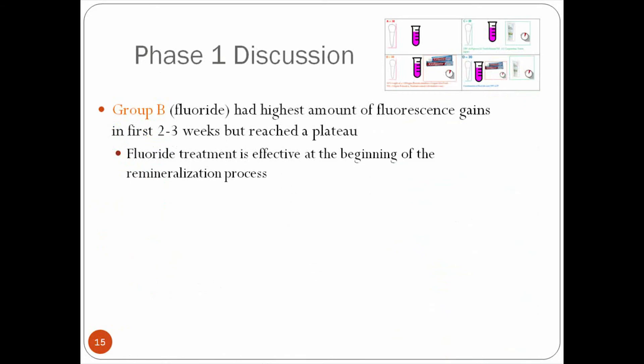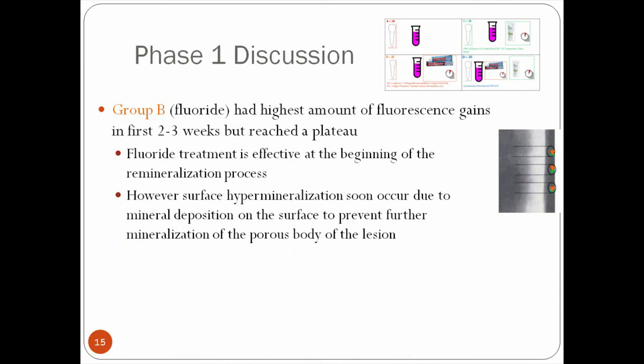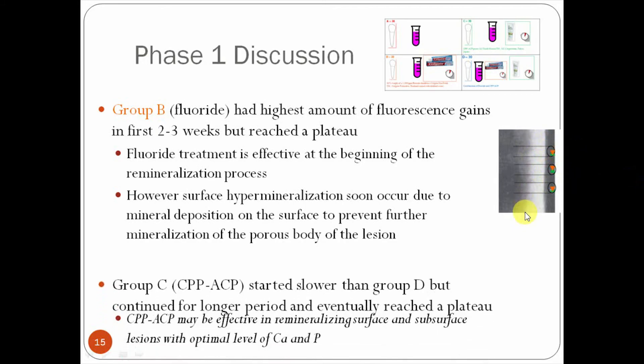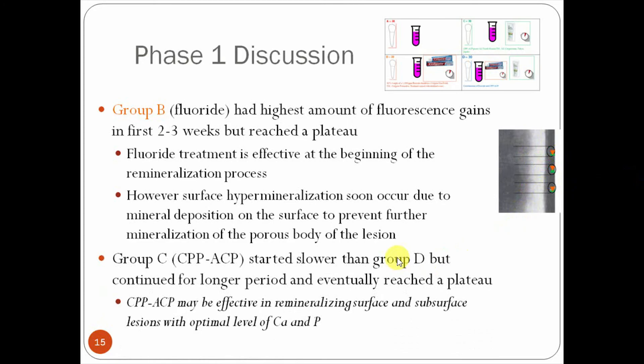Continuing along with the phase one discussion, in group B, the fluoride was the one that had the highest amount of gains, but it quickly reached the plateau within the first two to three weeks. So we think it's very effective at the beginning of the surface. We're hypothesizing, the researchers hypothesized, that there was some sort of deposition that made it more difficult for further remineralization. Group C, which was the GC tooth mousse, the remineralization was slower, but again, it continued longer, but it eventually reached that same plateau.